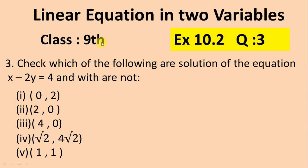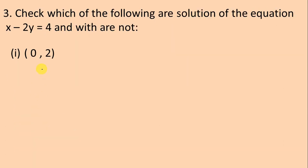In today's class we will solve class 9 mathematics, linear equations in two variables, Exercise 10.2, Question 3. Question 3 is: check which of the following are solutions of the equation x minus 2y is equal to 4. According to this question we have to solve 5 parts.